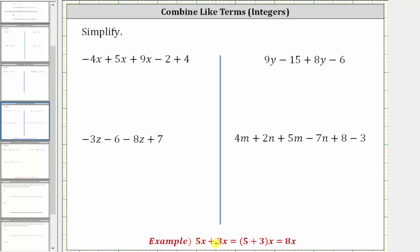For five x plus three x, again because they are like terms, and because five plus three is equal to eight, five x plus three x is equal to eight x. So to combine like terms, we add or subtract the coefficients, and notice the variable part remains exactly the same.